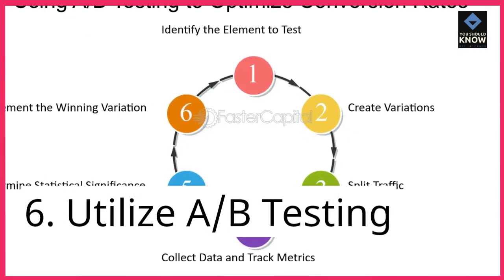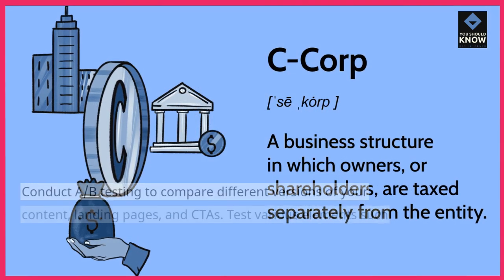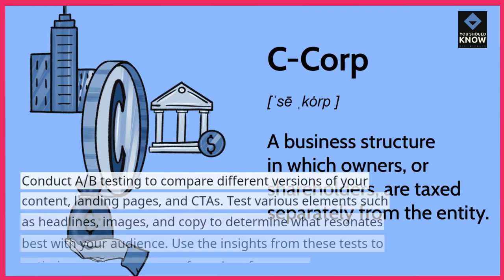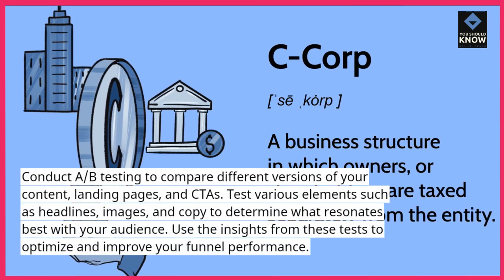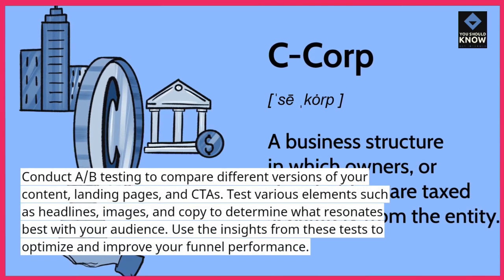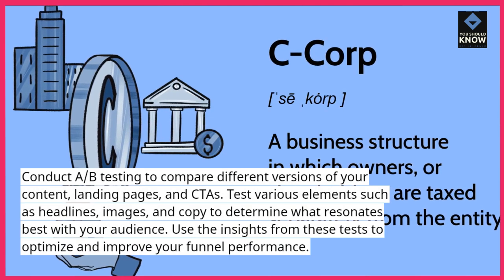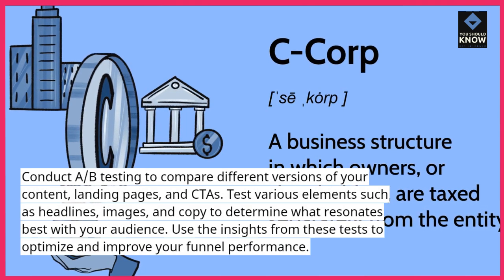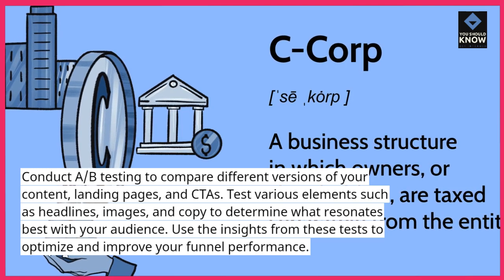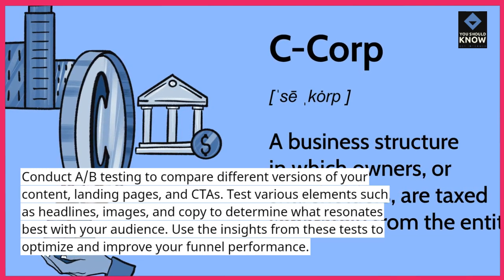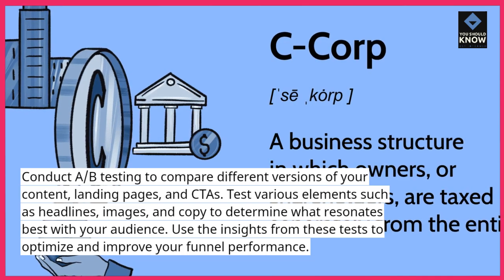6. Utilize A/B testing. Conduct A/B testing to compare different versions of your content, landing pages, and CTAs. Test various elements such as headlines, images, and copy to determine what resonates best with your audience. Use the insights from these tests to optimize and improve your funnel performance.